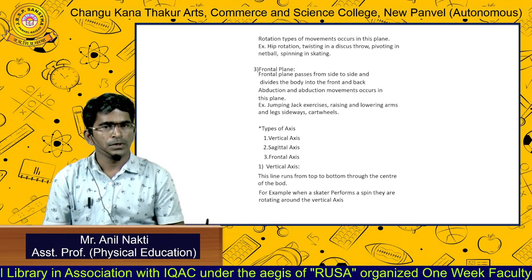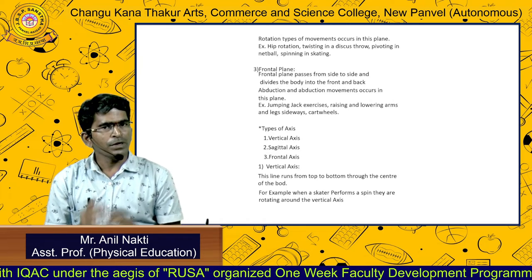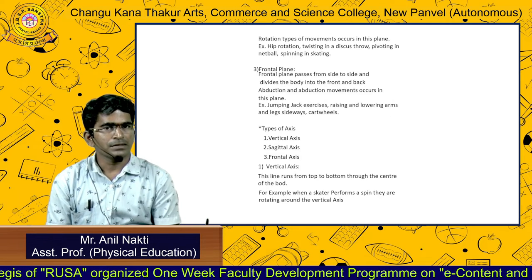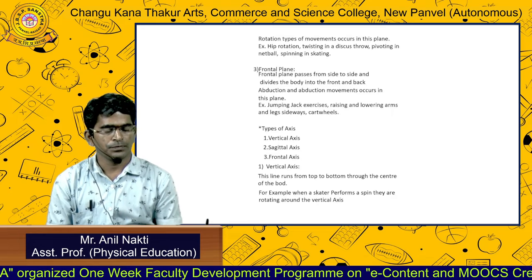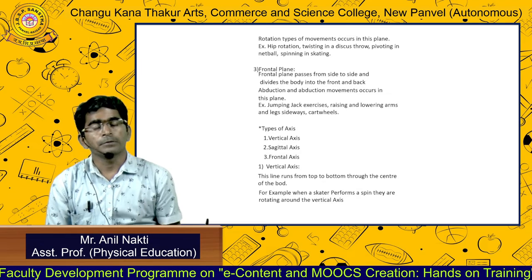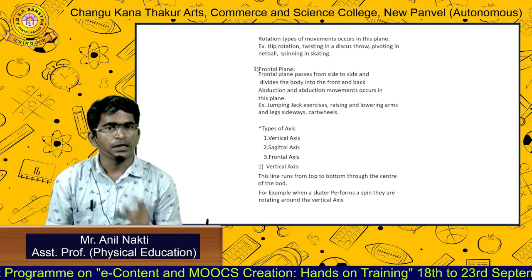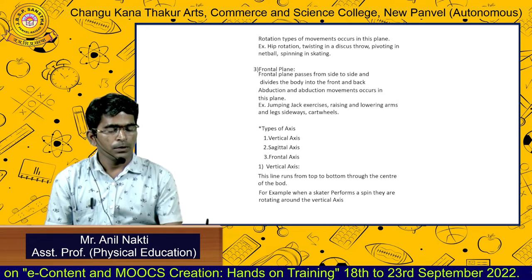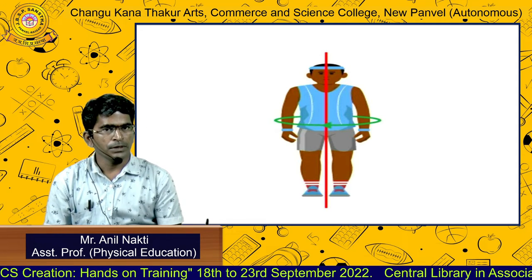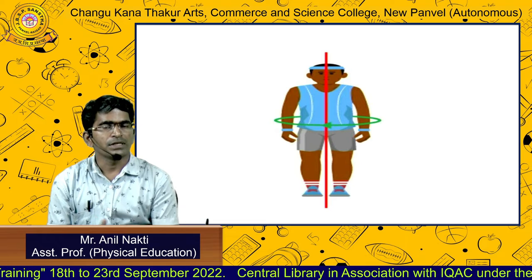The first is the vertical axis. The line runs from top to bottom — that is the vertical axis. The type of movement that takes place around the vertical axis is rotation. For example, when a skater performs a spin, they rotate their body around the vertical axis. We rotate our body around that vertical axis.